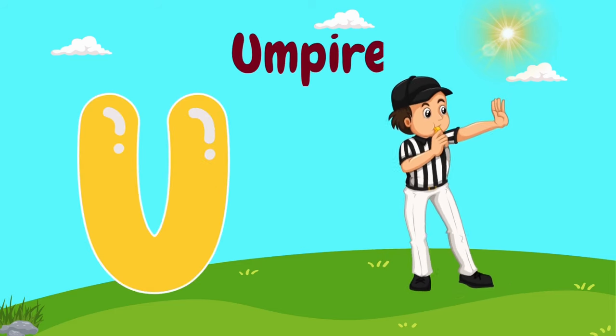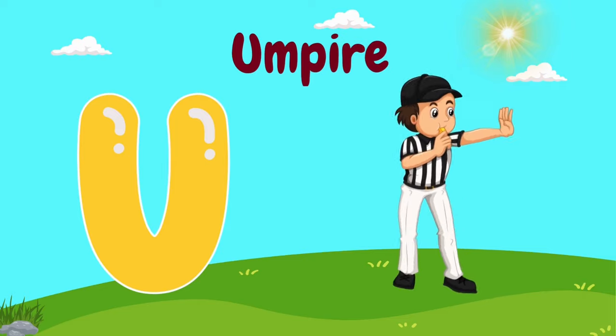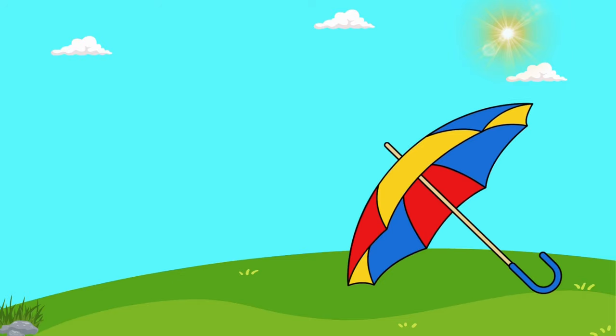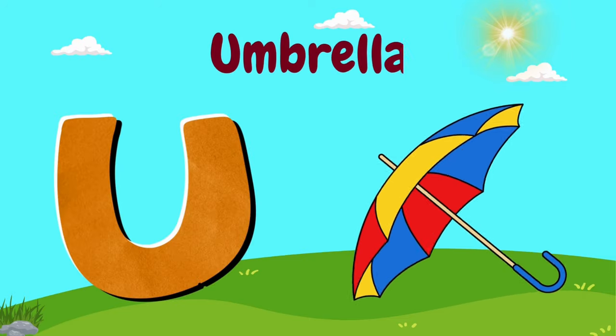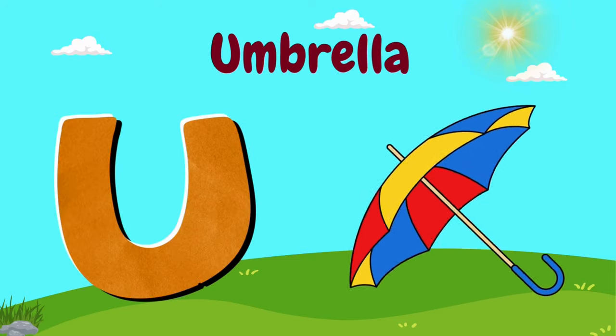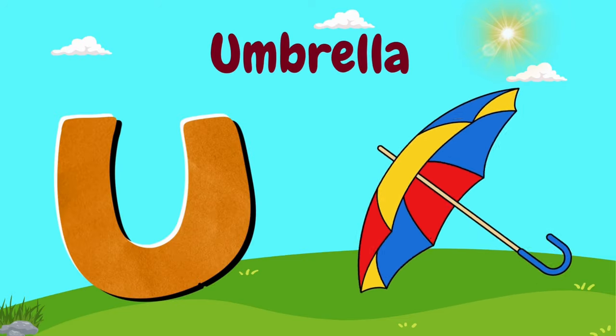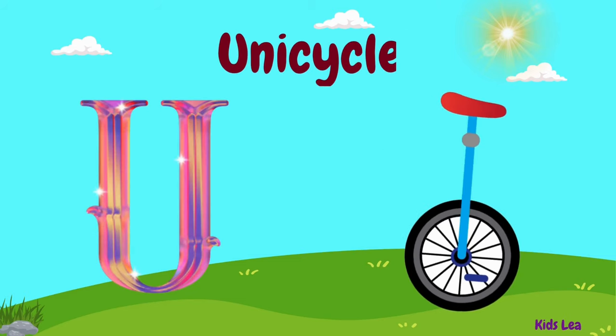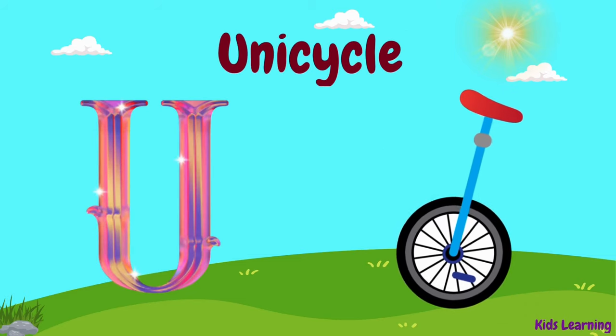U is for Umpire. U is for Umbrella. U is for Unicycle.